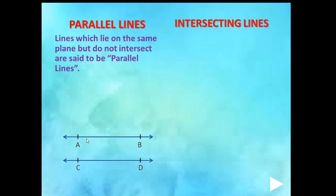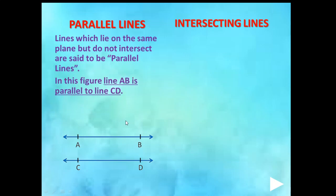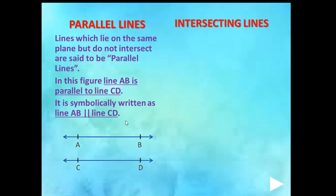In the figure, there are two lines: line AB and line CD. Both lines lie in the same flat surface and do not intersect each other. Even if extended from right or left, they won't intersect. So these are parallel lines. Line AB is parallel to line CD, written symbolically with two lines between them — line AB ∥ line CD.